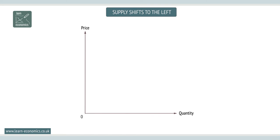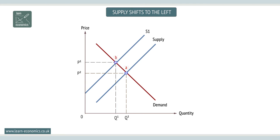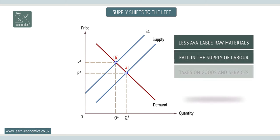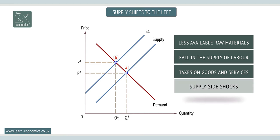A shift to the left is a decrease in supply. Assuming the price is constant, a shift in supply to the left could be caused by less available raw materials, a reduction in the supply of labor, taxes on goods or services, or bad weather or other disruptive natural events.